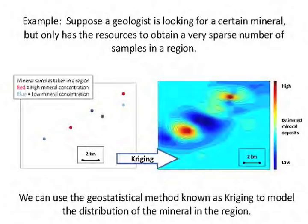We can then take the data from those six sample locations and, by using a process known as Kriging, estimate the distribution of the mineral in the entire region. Here on the right you can see we've used Kriging to estimate the distribution across the entire region. You can now see contours of estimated mineral concentration — dark blue being low, and yellow and red being higher concentrations.